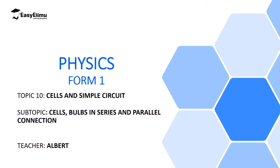Welcome to Easy Elimu Learning Simplified and welcome to this lesson. In the previous lessons we have discussed a simple circuit and we have seen how we can arrange different electrical components like cells, bulbs, connecting wires, and even resistors and capacitors in a circuit using simples.